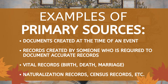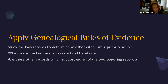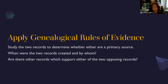If one of them isn't a primary source and they're both equal, you should study the two records and find out who created them and when they were created. For instance, you give a little extra weight to a record created by the person about themselves, or a record that's created closest to the event that's under question.